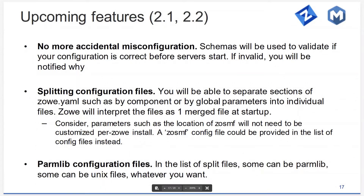What should be happening soon is that when you start up ZOE, it's going to check your zoe.yaml file, and if something in there doesn't match what the schema says, ZOE will refuse to start and print out why. For example, if you chose a port value outside the maximum range, ZOE will tell you that. There will be no more guesswork.